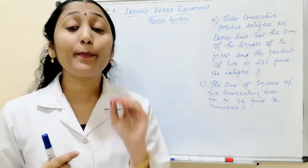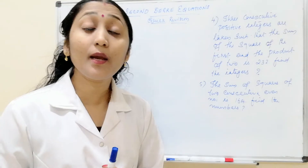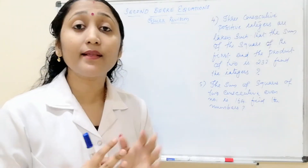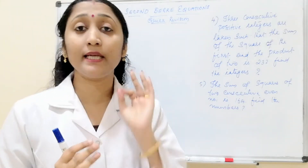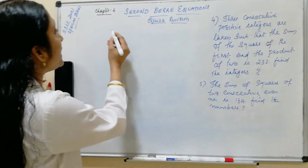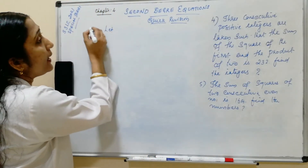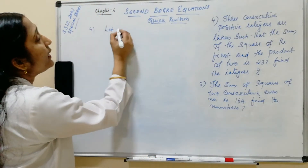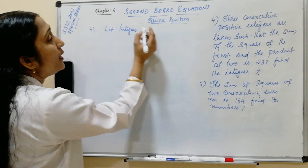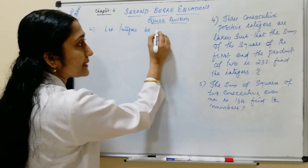3 consecutive positive integers means we have to define 3 integers. Let the integers be: first integer x.